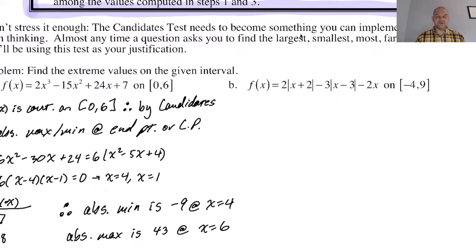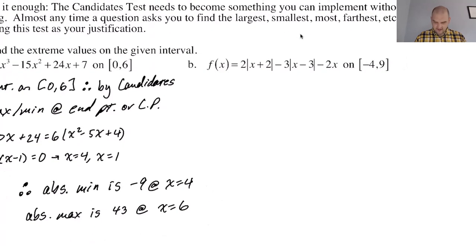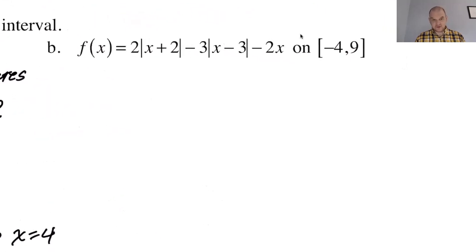We're going to look at the endpoints and the critical points. The issue with this function is what are the critical points and how much effort do we want to put into finding them? I actually know that the critical points are going to be at x equals negative 2, x equals 3, but I think we should probably put in a little extra effort on this one. So what I'm going to do is rewrite this as a piecewise function. It's a little bit of work, but it's not really the end of the world.